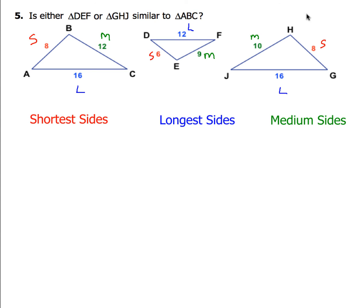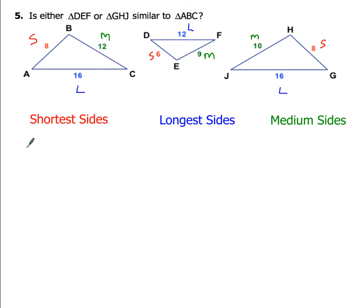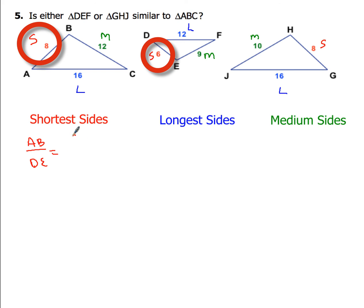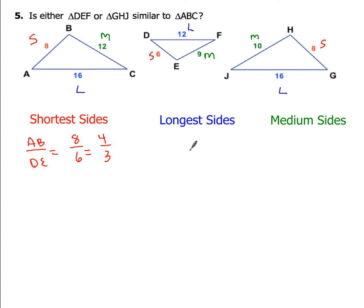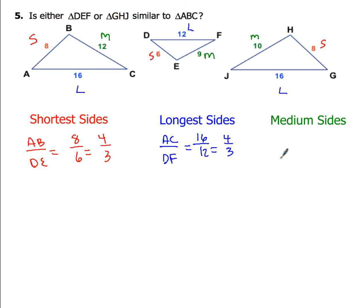Now with those labeled, test the ratio of the shortest sides for triangle DEF versus triangle ABC. The shortest side AB to DE is 8/6, which reduces to 4/3. Next, compare the longest sides: AC to DF is 16/12, which also reduces to 4/3 since 4 divides evenly into both 16 and 12.